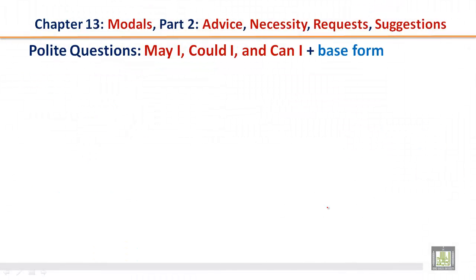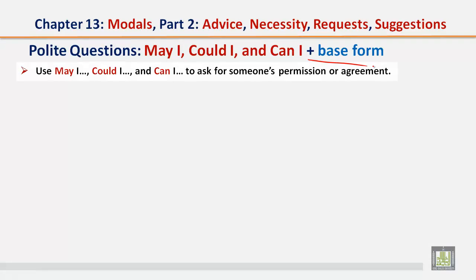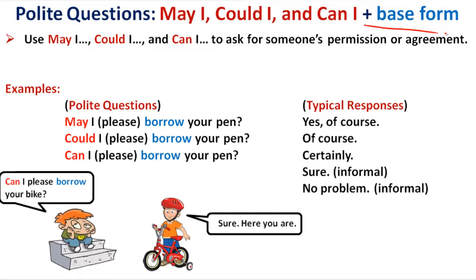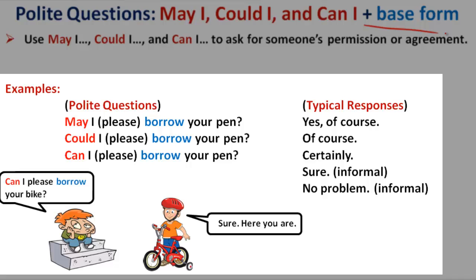Polite questions: May I, could I, and can I plus the base form. Use may I, could I, and can I to ask for someone's permission or agreement. Examples of polite questions: May I please borrow your pen? Could I please borrow your pen? Can I please borrow your pen?